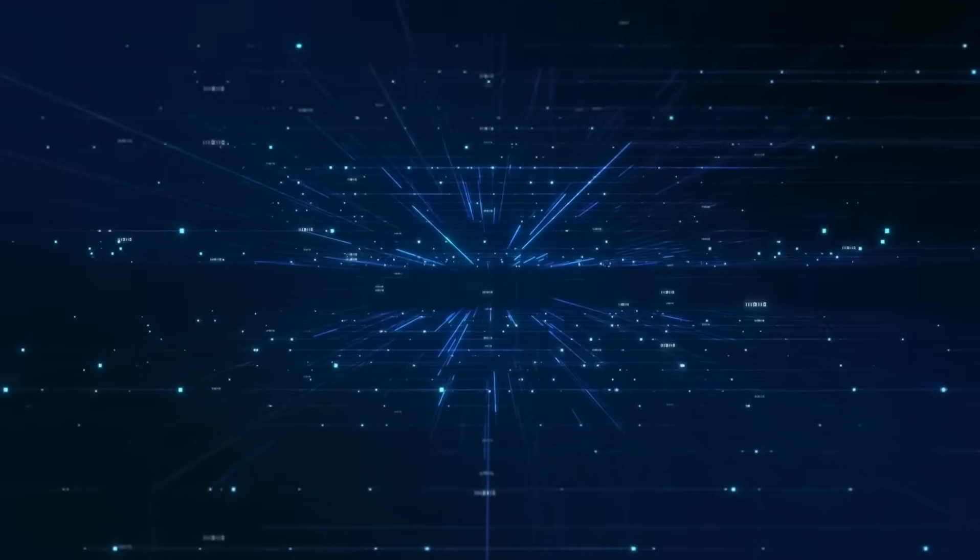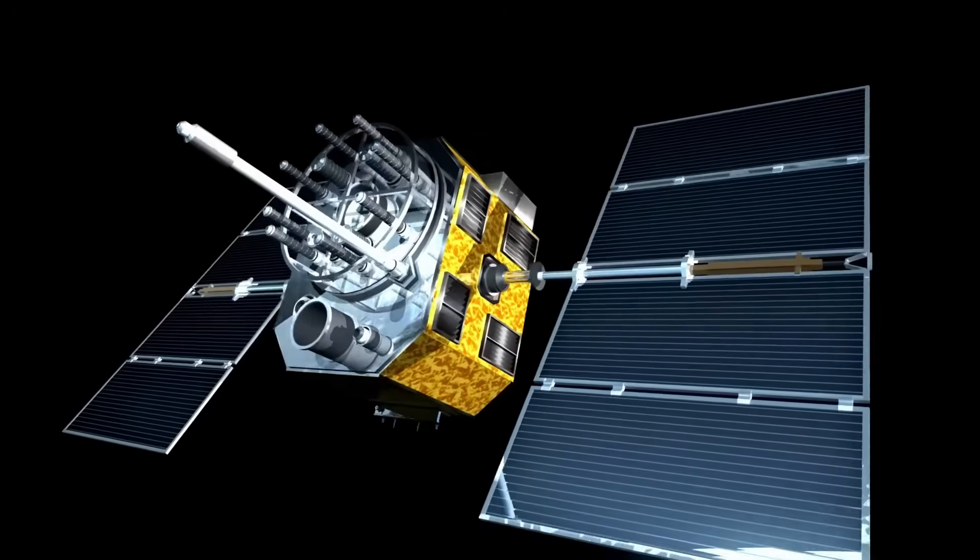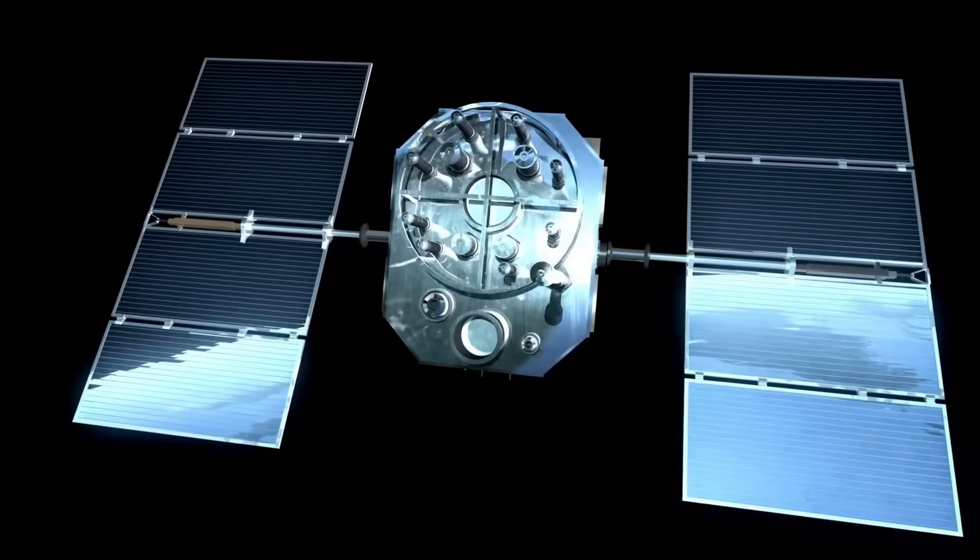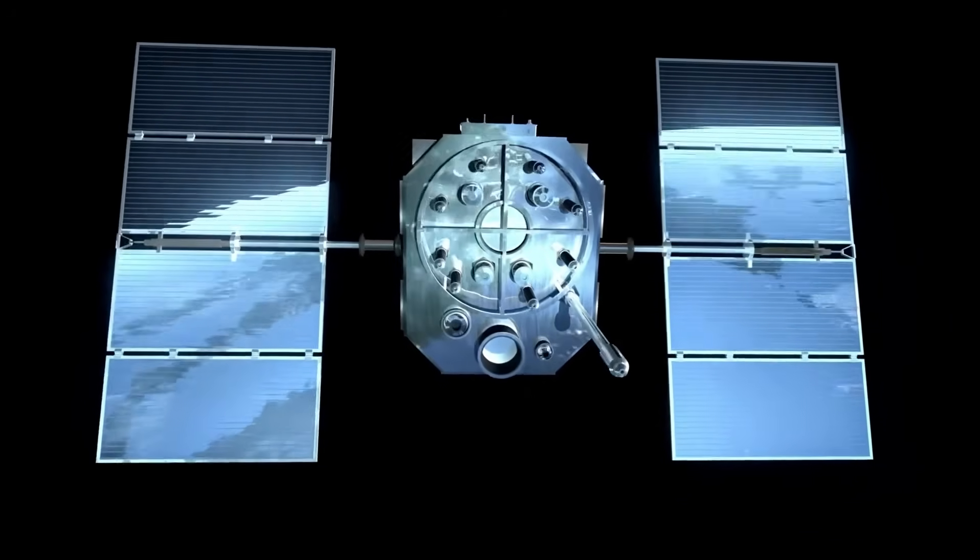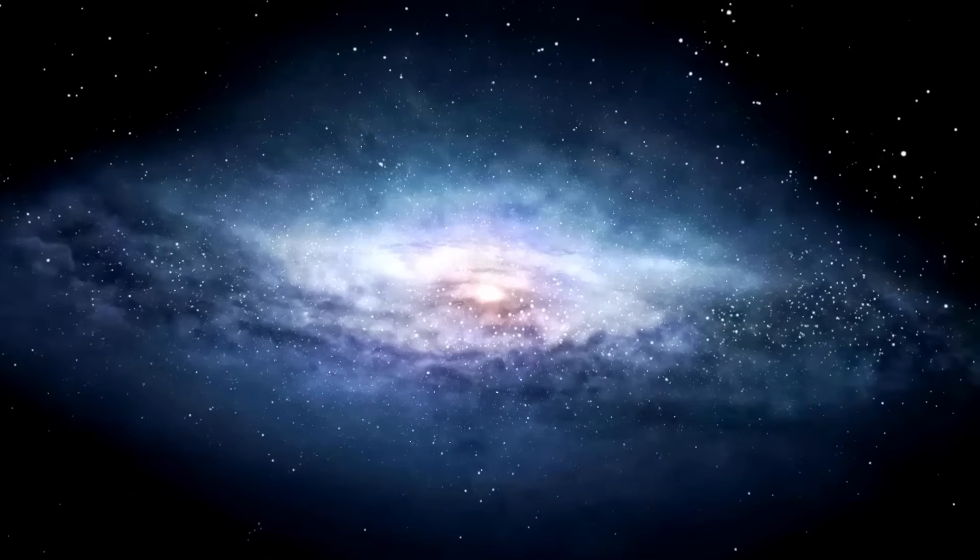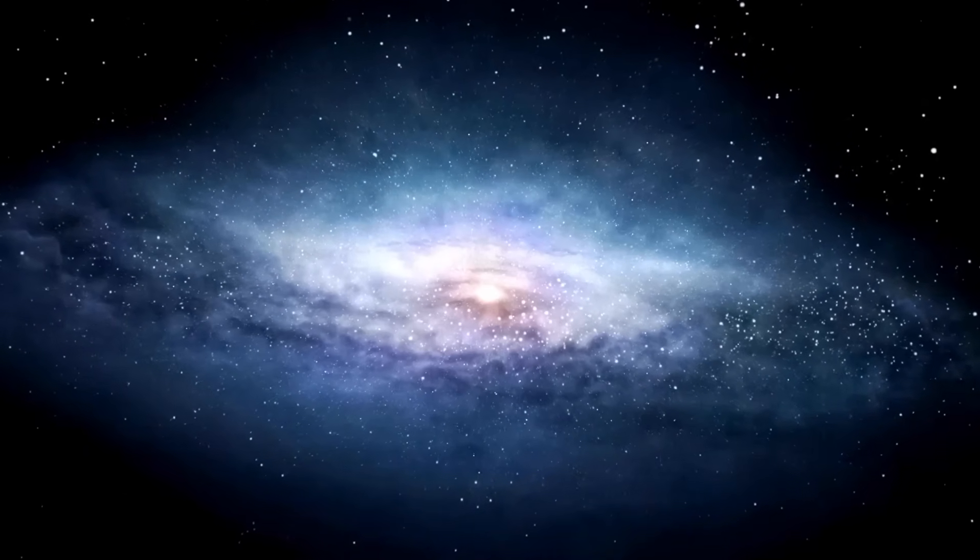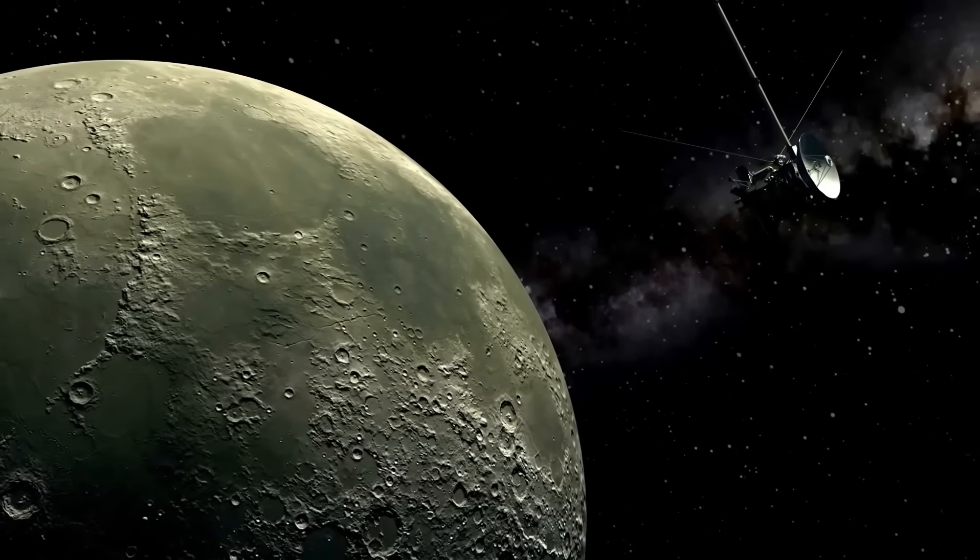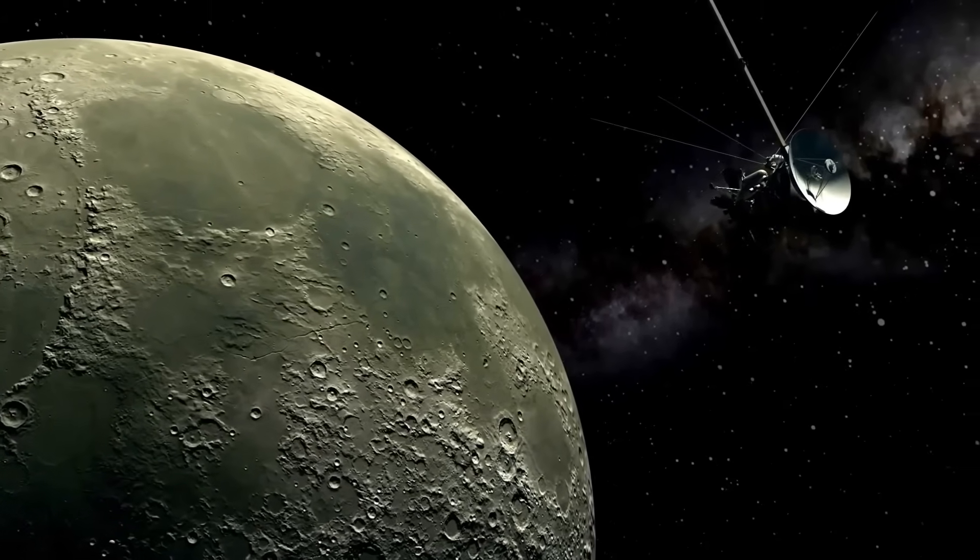Voyager 1, the NASA space probe launched in 1977, has been for years an uncanny wanderer through the interstellar emptiness, sending back information from parts of space previously unvisited by human hand or machinery. Designed originally for a four-year mission to study Jupiter and Saturn, it has surpassed all expectations, traveling more than 15 billion miles from Earth.